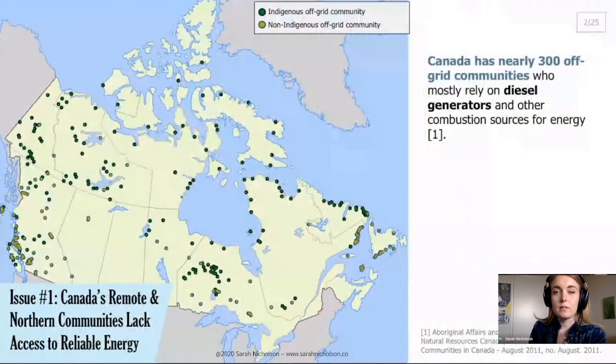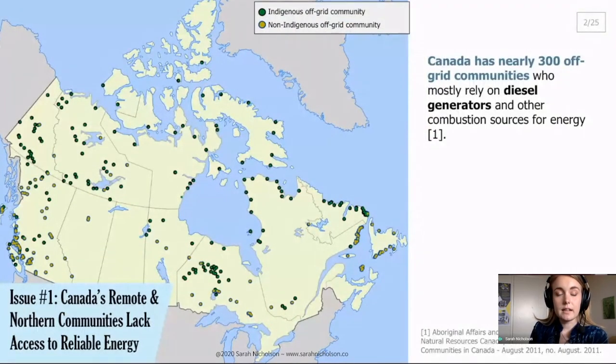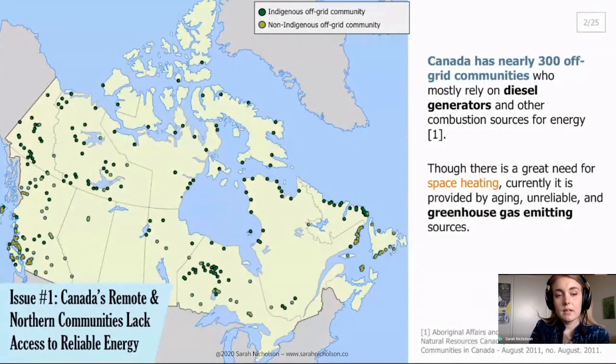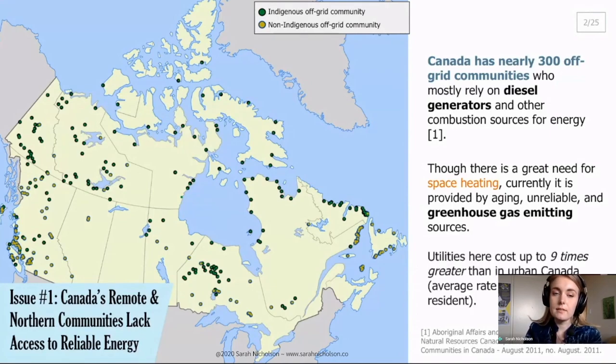The first issue that I looked into with this research was the 300 off-grid communities in Canada. These communities are not connected to traditional utility lines, so they rely on diesel generation for their electricity. While we live in a cold climate, the heating sources for these communities are predominantly aged and unreliable emitting sources. As well, because of the transportation of this fuel, the costs for electricity in these areas are up to nine times greater than the average Toronto resident. So there is a real energy need in these communities.